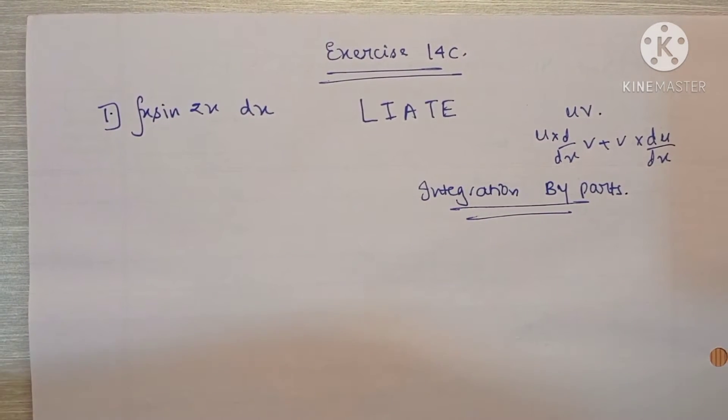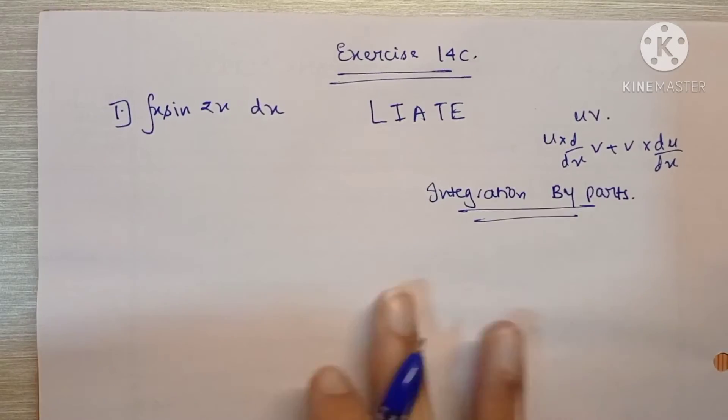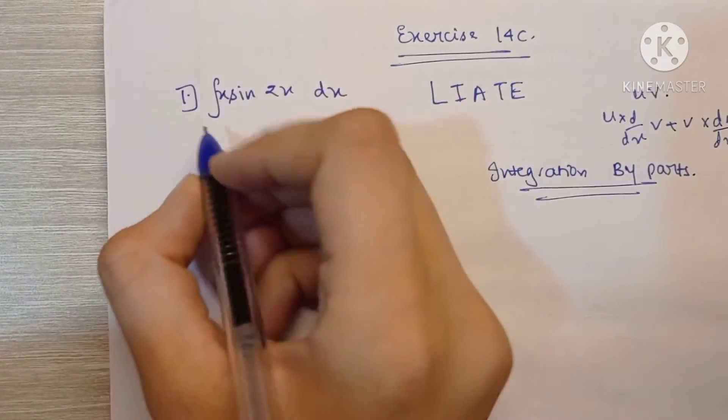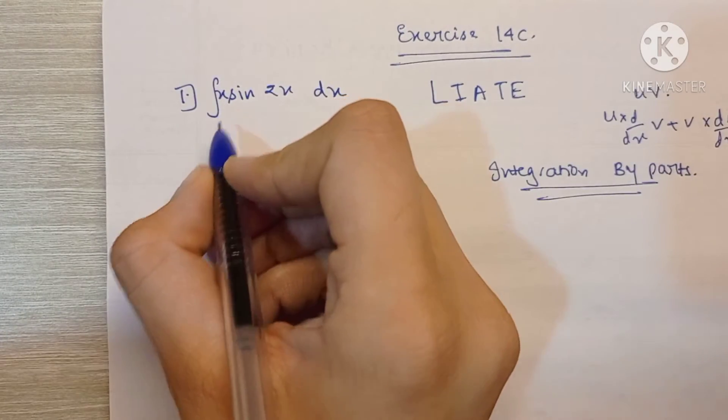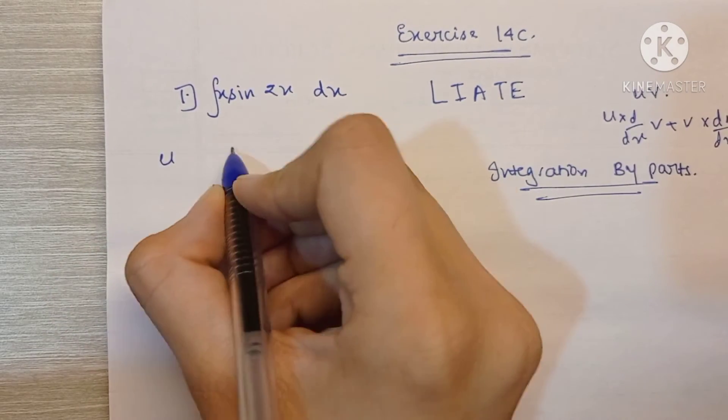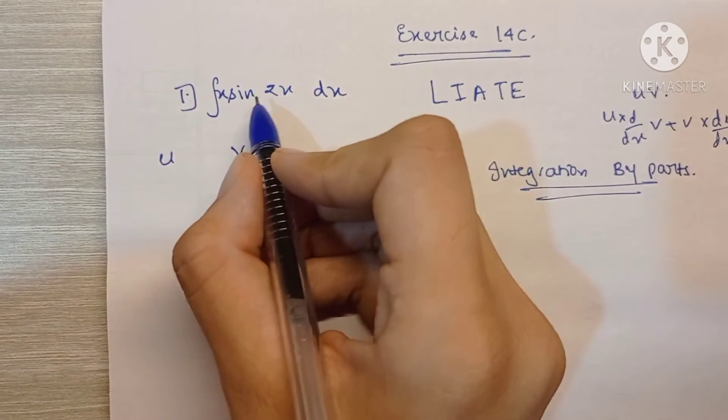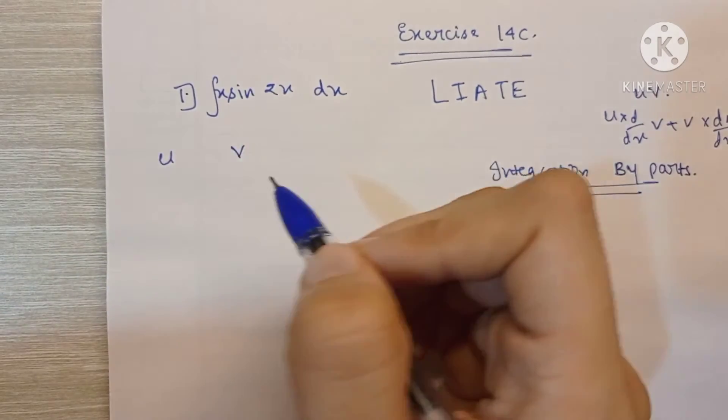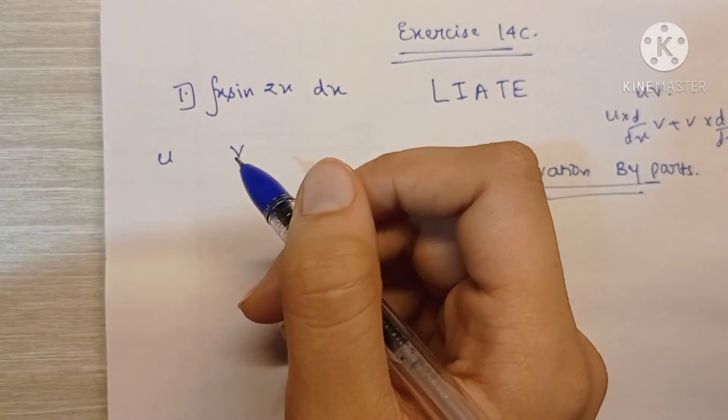So let's see the formula for the uv rule here or the by parts rule. So whenever the first function that we want is u and the second function is v, we can see there are two terms or two functions here: x and sin 2x.